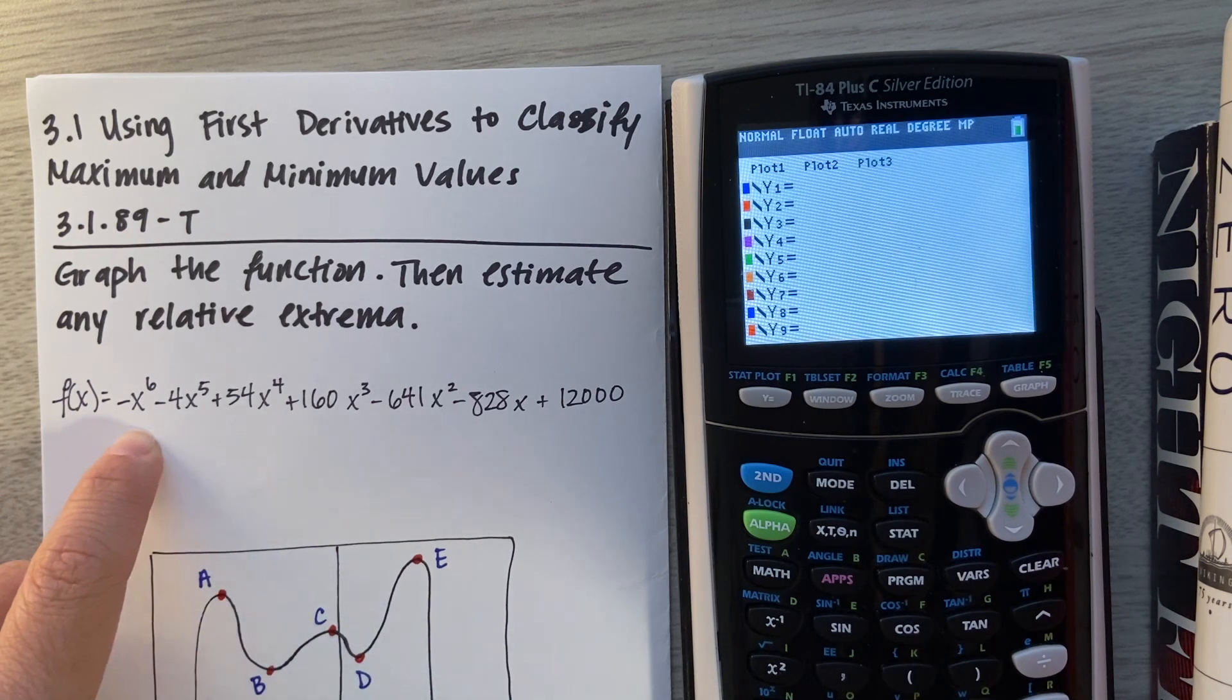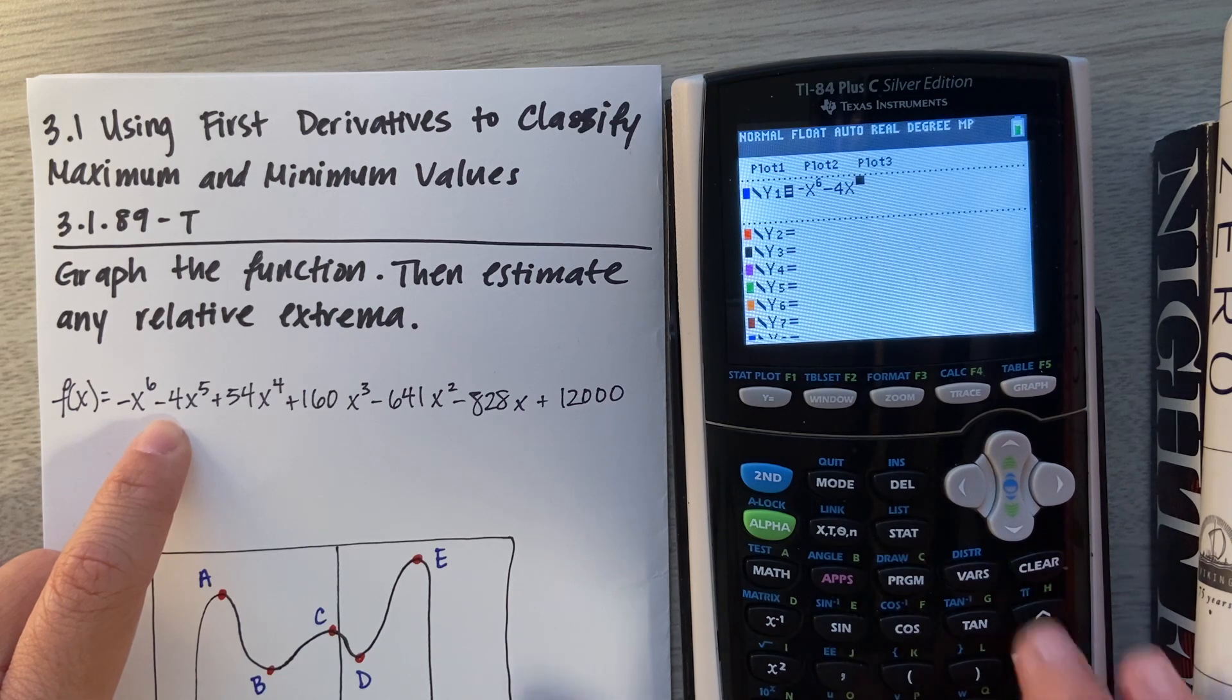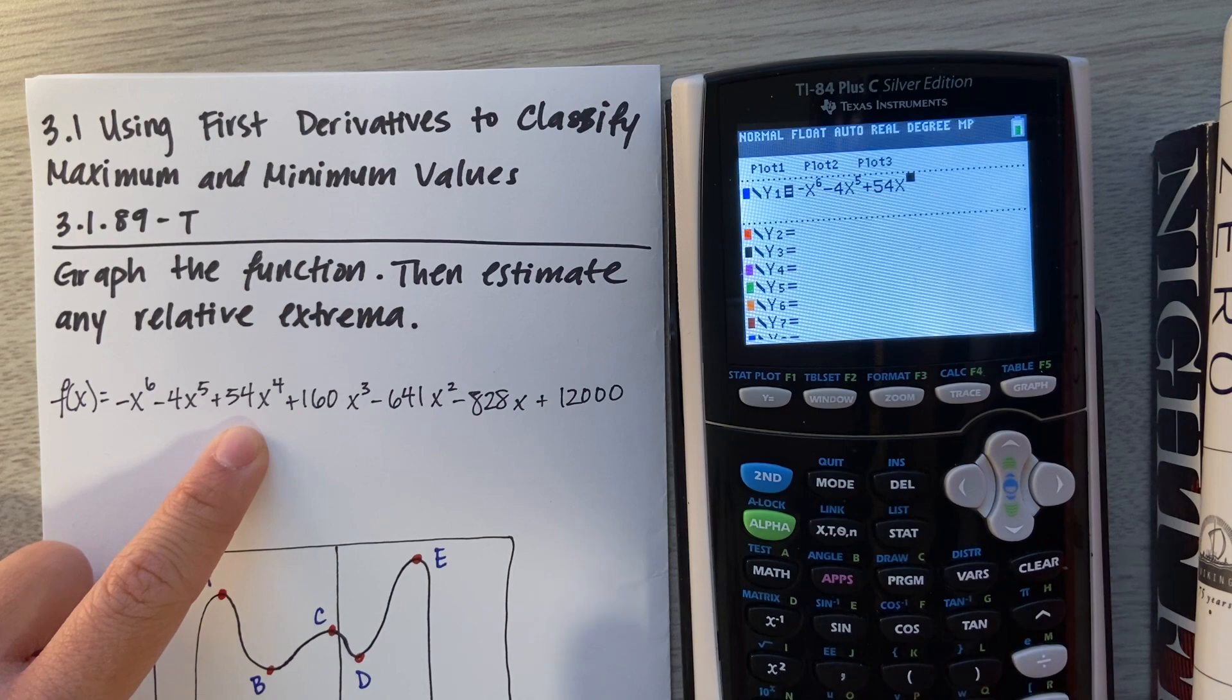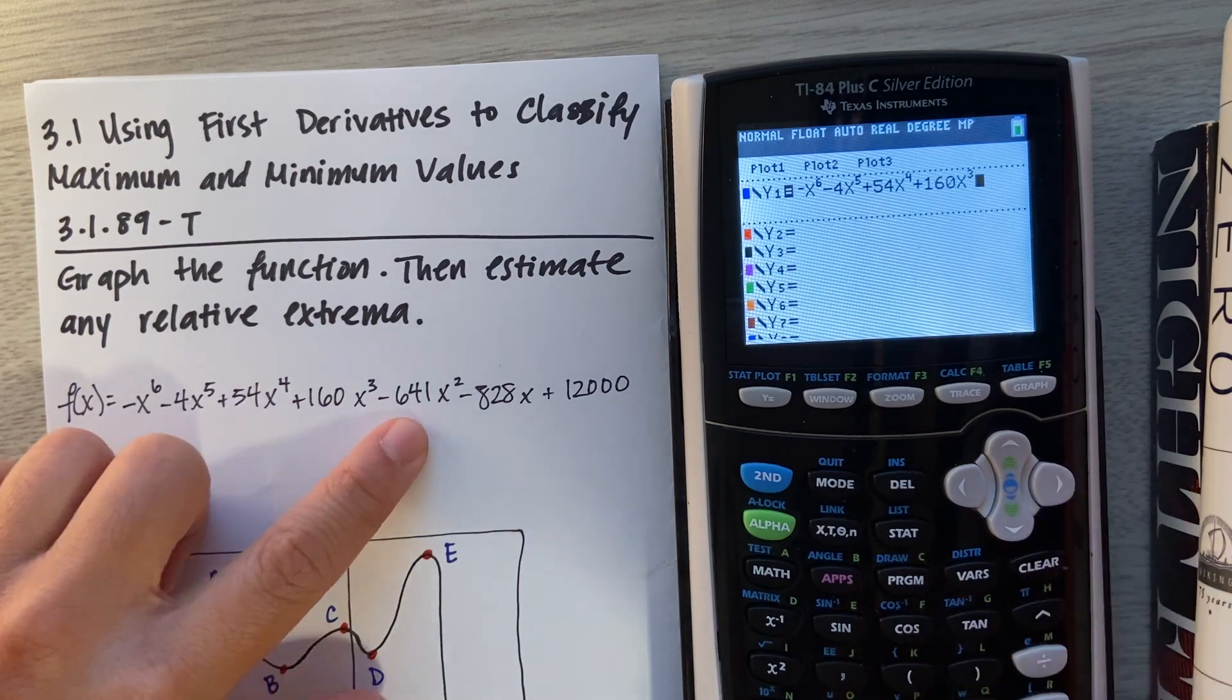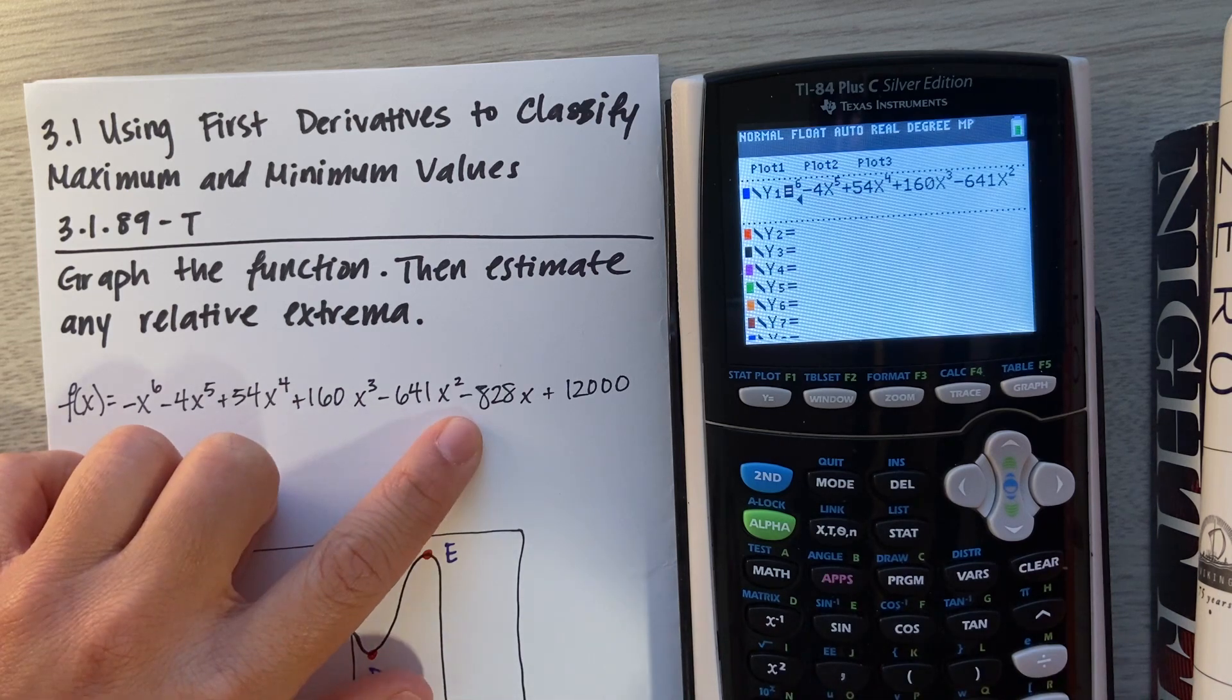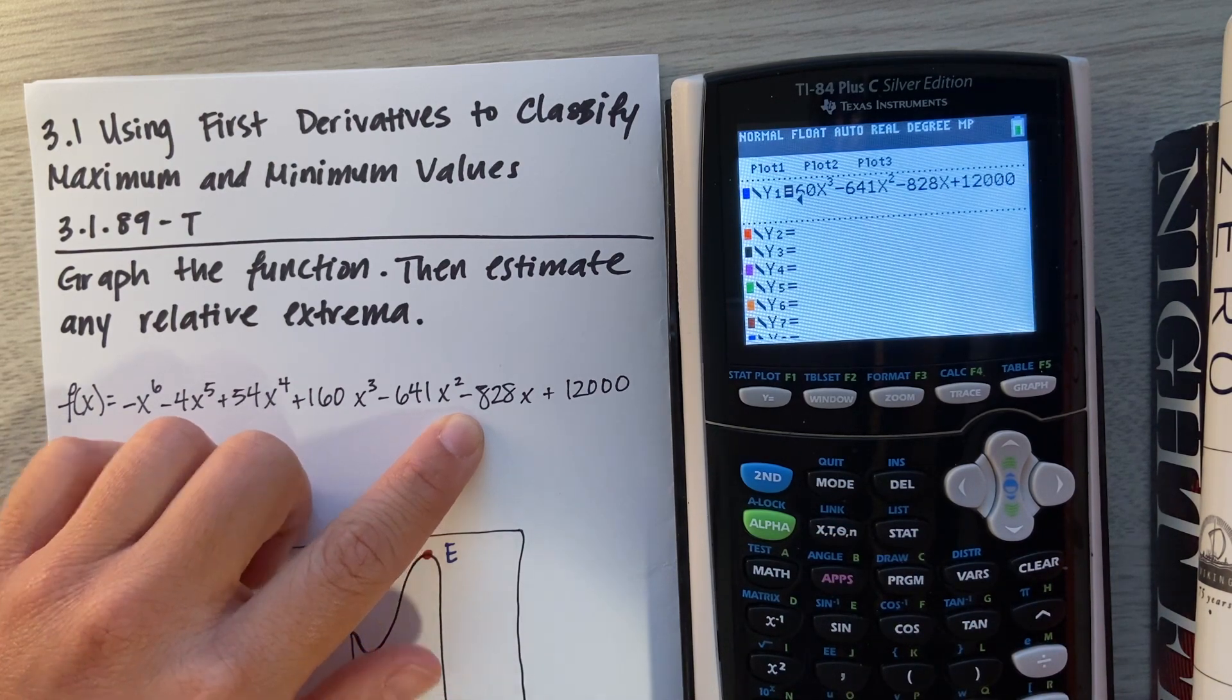Feel free to do this along with me if you like. We have -x^6 - 4x^5 + 54x^4 + 160x^3 - 641x^2 - 128x + 12,000. Perfect.